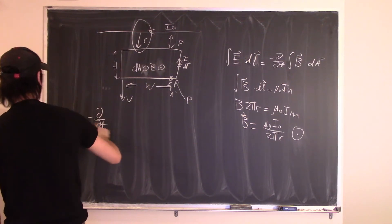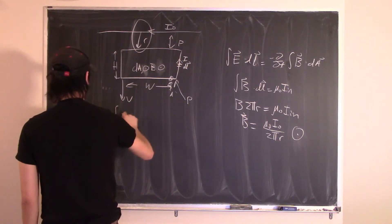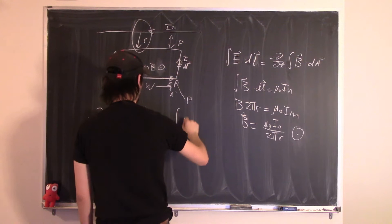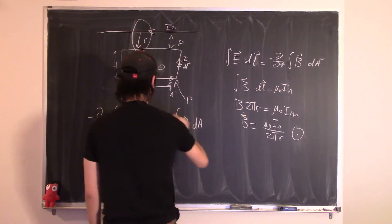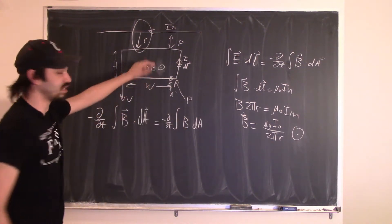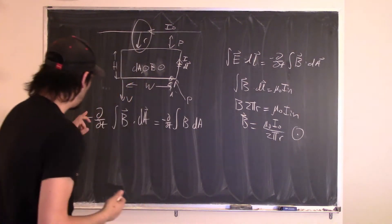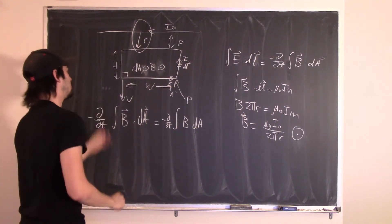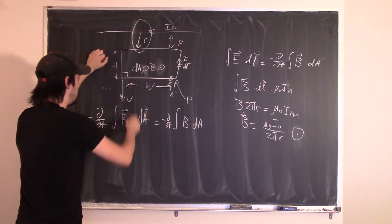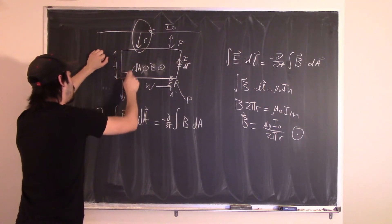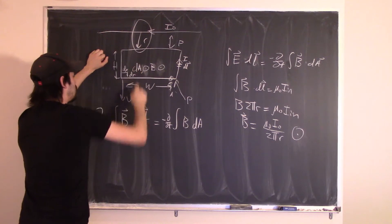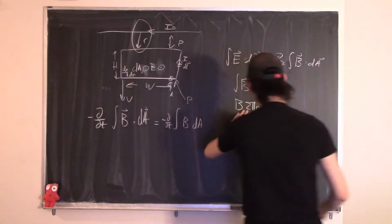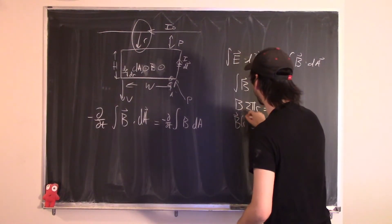The negative partial derivative with respect to time of the integral of B dot dA becomes minus the partial derivative of the integral of B times dA, since B and dA are in the same direction. The area element dA is dX times dR, because the magnetic field varies as a function of R — the further from the wire, the smaller B is.